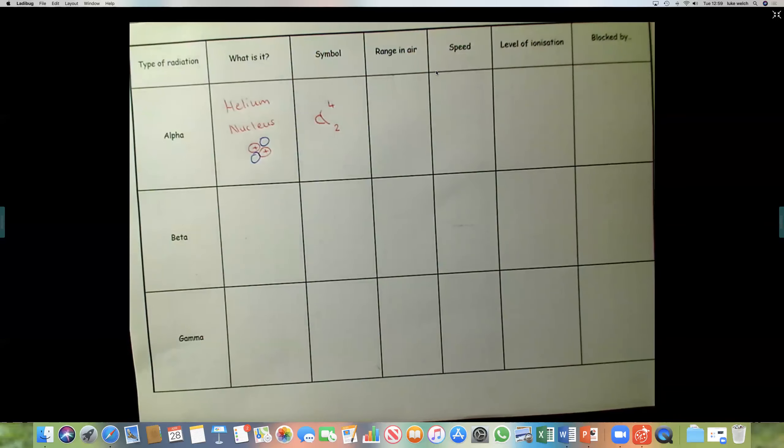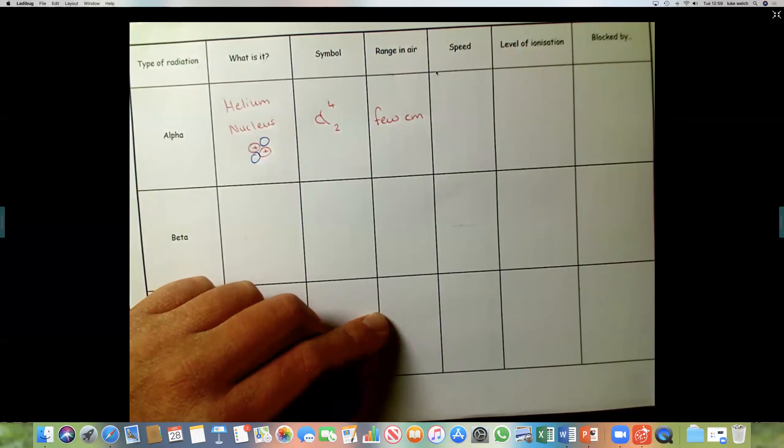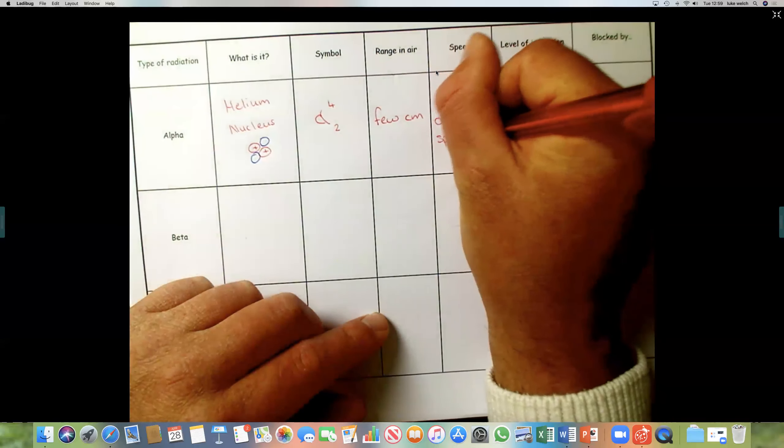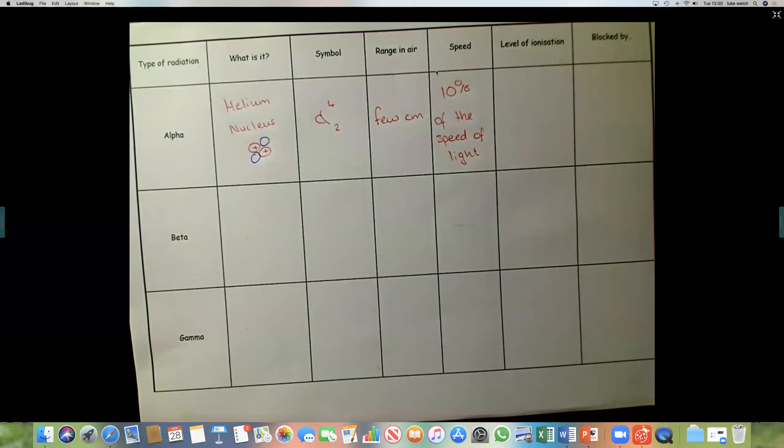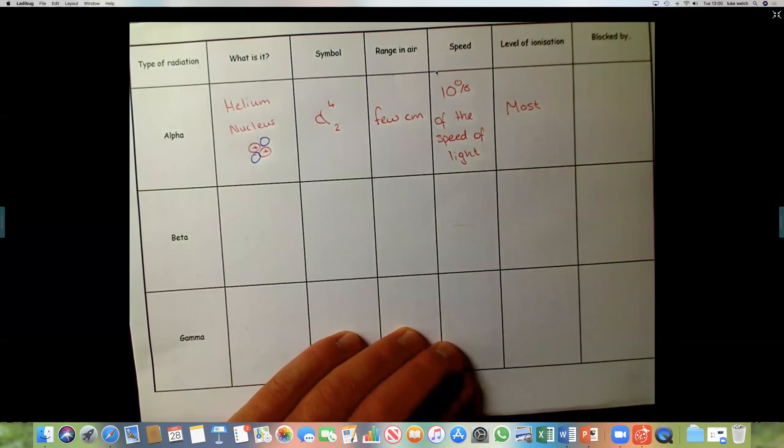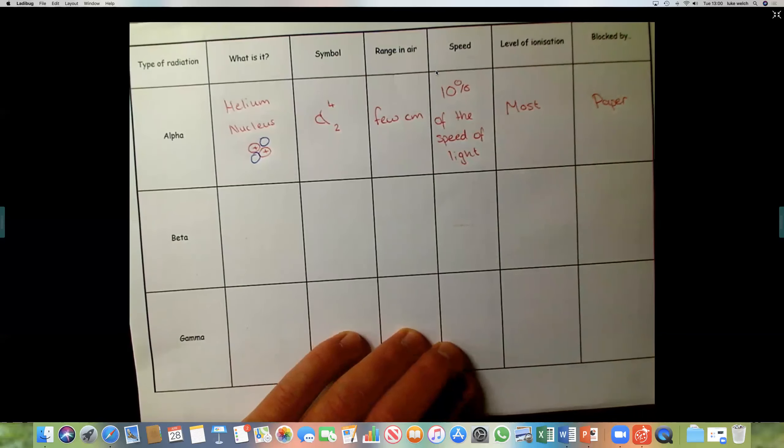So the range in air of an alpha particle is a few centimeters. Speed, 10% of the speed of light. Now, doing some research online, these figures vary. But the idea is that you know which is the fastest and which is the slowest level of ionization. I'm going to come on to look at what ionization means after filling this table in. And it is the most ionizing. And it's blocked by paper. So it doesn't take much to block an alpha particle.